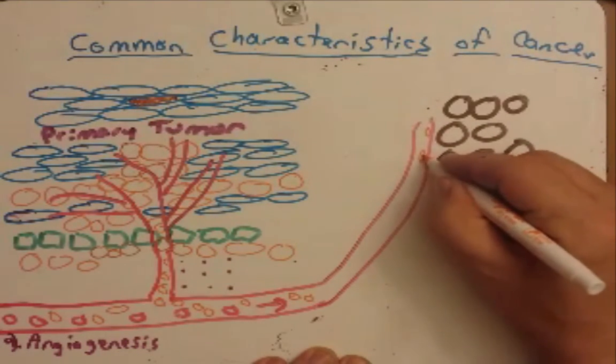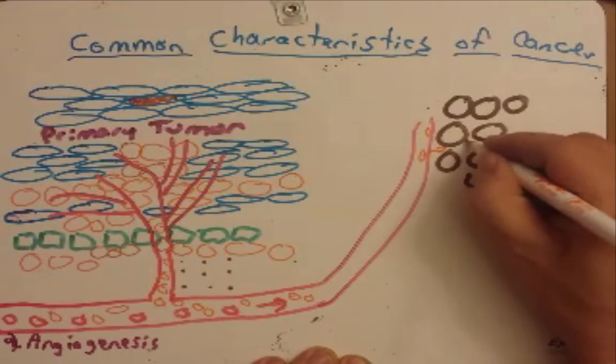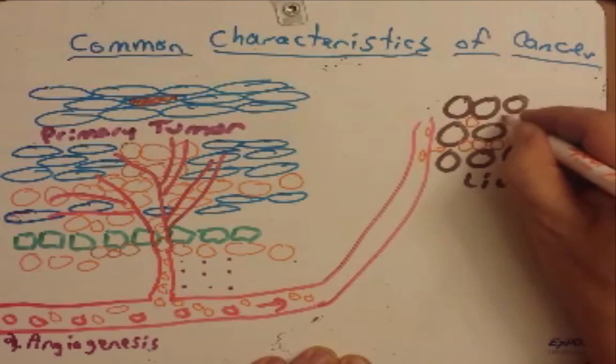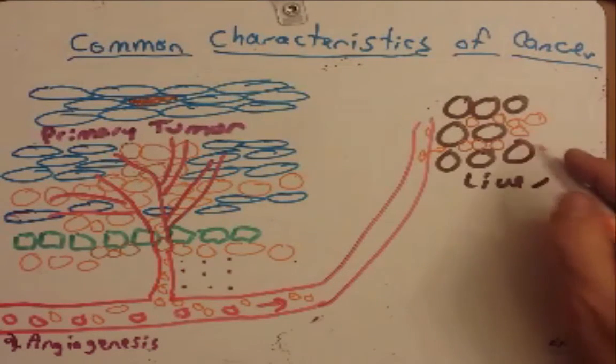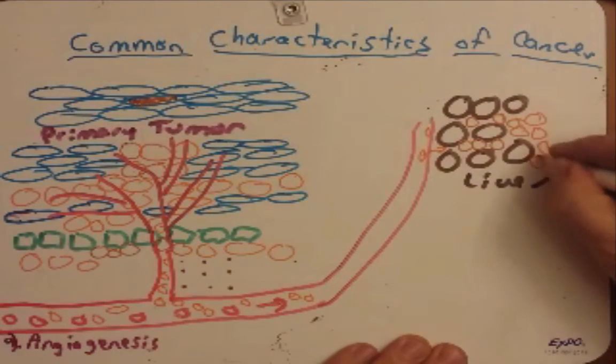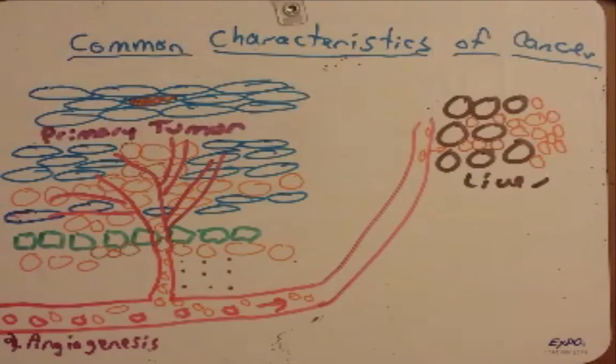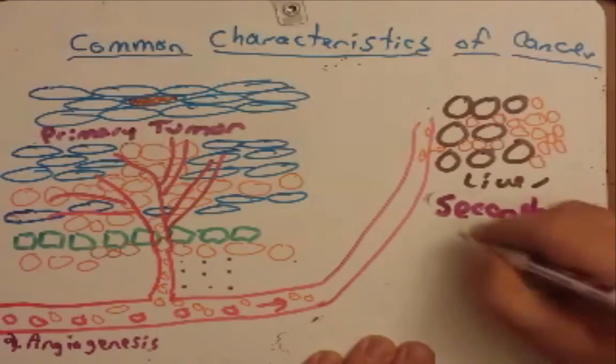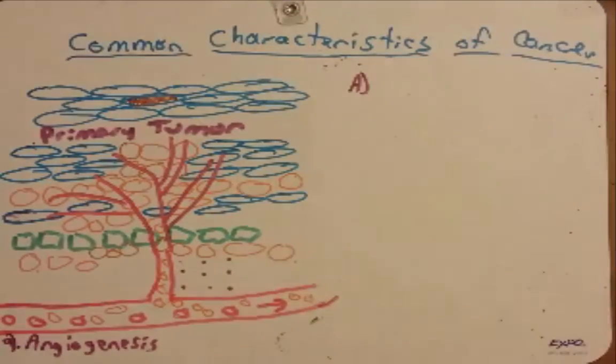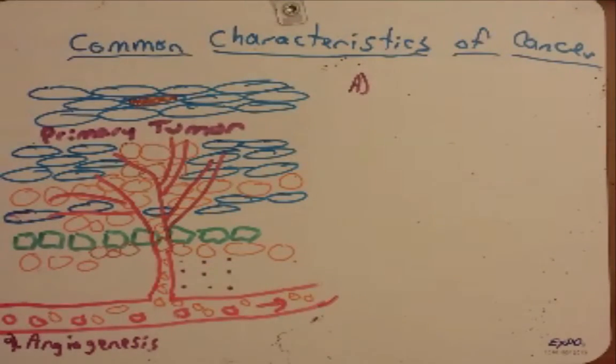Our tumor cells can now end up here and begin to invade the liver tissue. They're still going to have those mutations so they're still going to start to outcompete and grow faster than the liver cells and set up a new tumor site. We call this our secondary tumor. I want to list a few other characteristics.